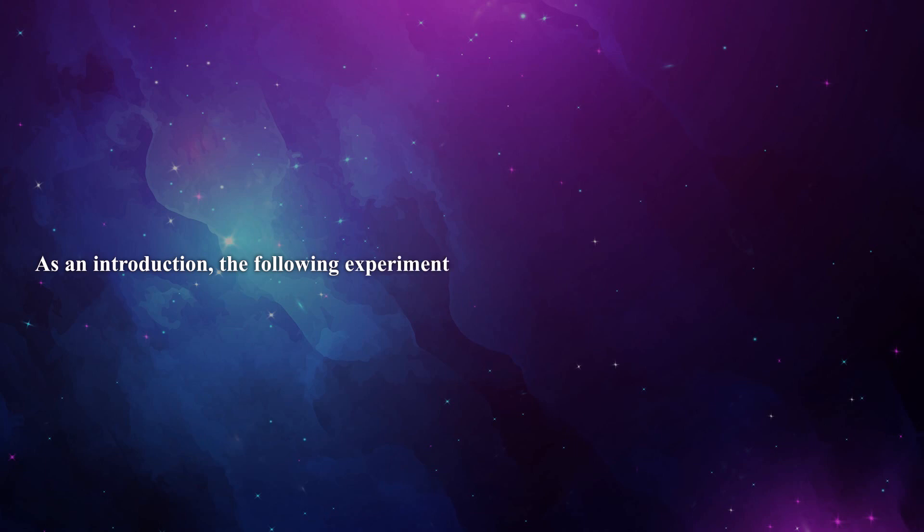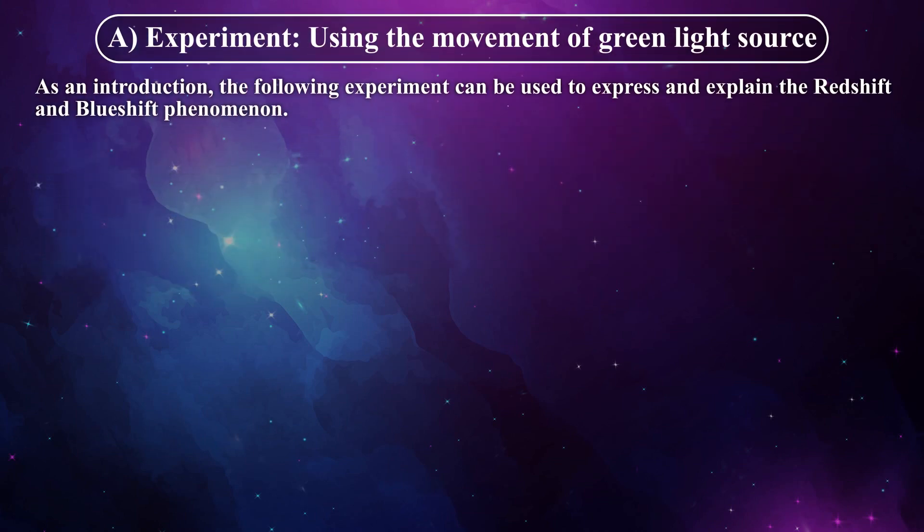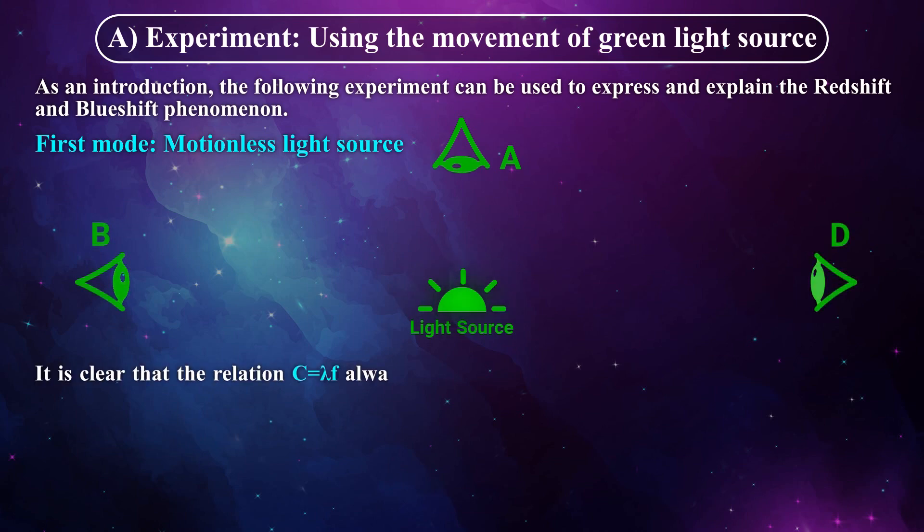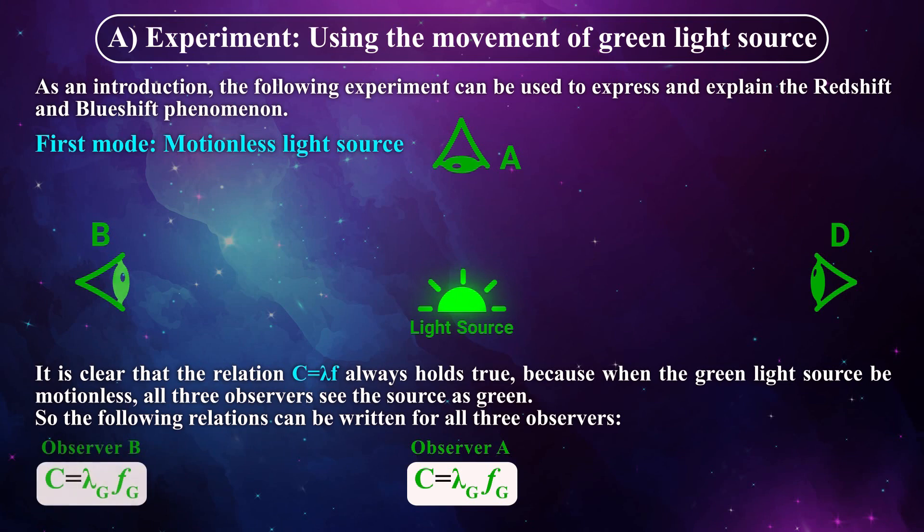As an introduction, the following experiment can be used to express and explain the redshift and blueshift phenomenon. Experiment using the movement of green light source, first mode: motionless light source. It is clear that the relation C equals lambda F always holds true because when the green light source is motionless, all three observers see the source as green, so the following relations can be written for all three observers.